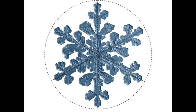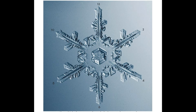Six is the magic number for snow crystals. This is because of the nature of water. Water molecules, the smallest units of water, attach themselves in groups of six, which usually leads to crystals with six arms or six sides.